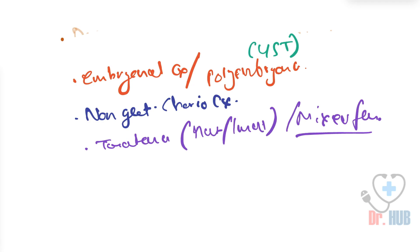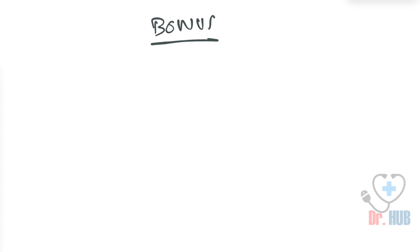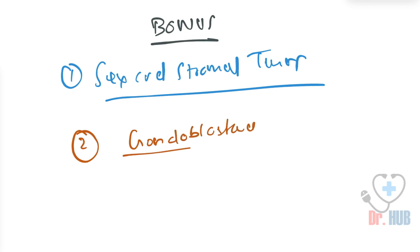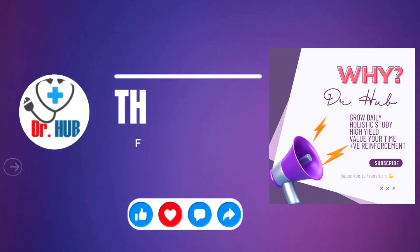Now we'll be asking our bonus questions. You can answer these in the comments. The first bonus question is: name the sex cord stromal tumors — what falls under them? The second question is: what are the types under gonadoblastoma? You can answer them in the comments.